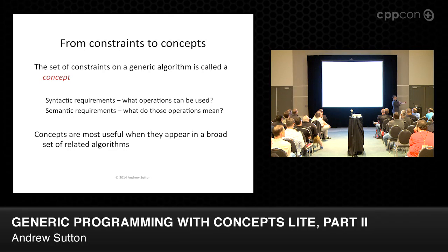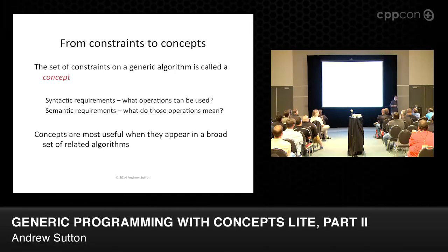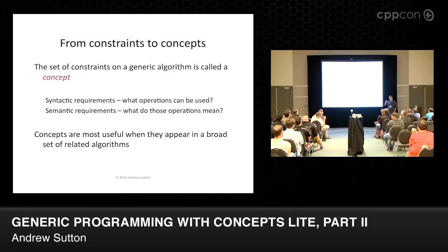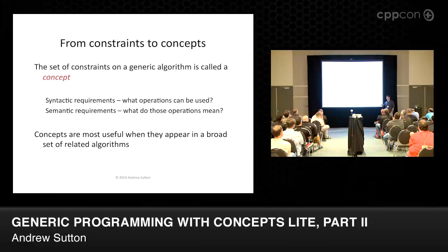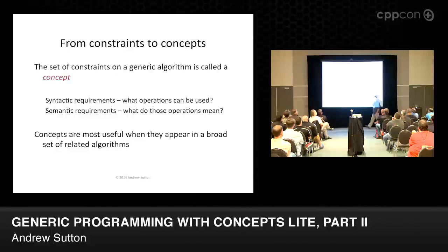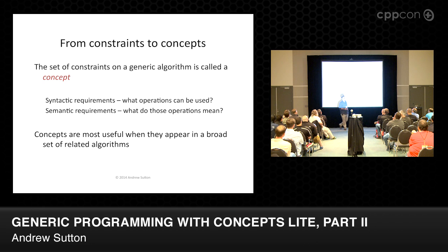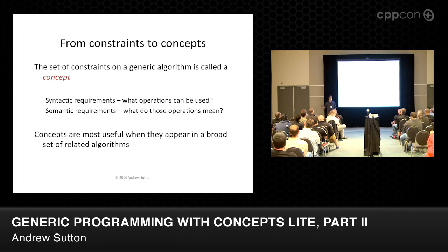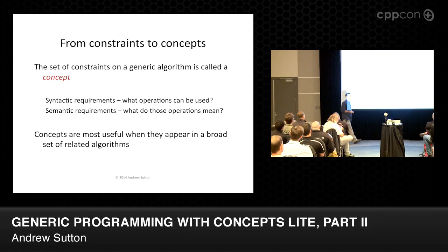The other thing we have with concepts are semantic requirements, which actually explain what those required operations are supposed to do. Those requirements explain what behaviors are required for the algorithm to be — in the way Alex would phrase it — provably correct. Because if you don't have any guarantees on the semantics of those operations, then your algorithms can do literally anything. It doesn't matter what the syntax is — you just pull out your hard drive, no big deal. We like having semantics associated with those operators.